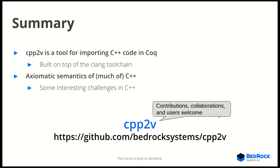In summary, CPP2V is a tool for importing C++ code into Coq. It's built on top of the Clang toolchain and by virtue of that inherits a lot of the functionality already built into Clang. We also have an axiomatic semantics for a large portion of C++. There are interesting challenges like dynamic dispatch, but building off Iris has been a very great experience — we've been able to express things that 10 years ago I wouldn't have thought barely possible. CPP2V is open source — contributions, collaborations, and users are all welcome. Thank you so much.